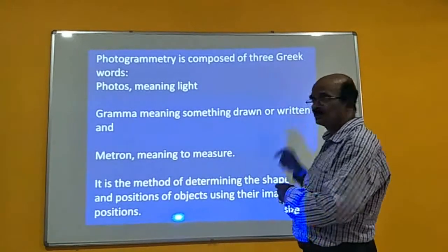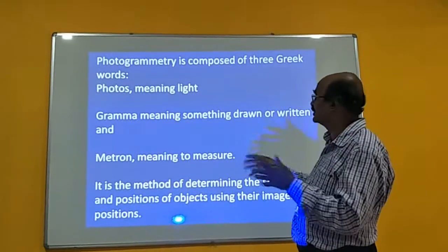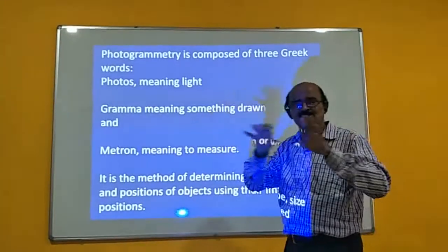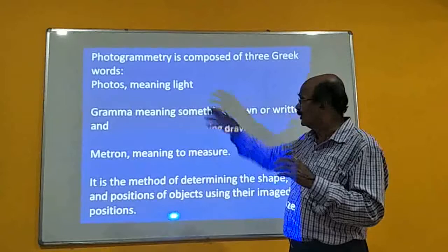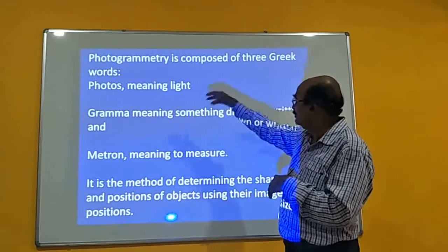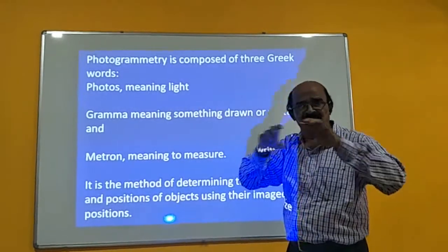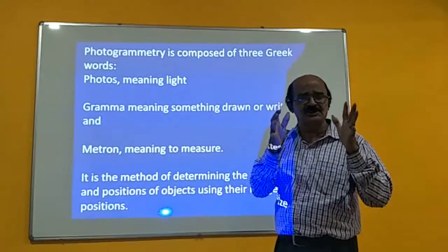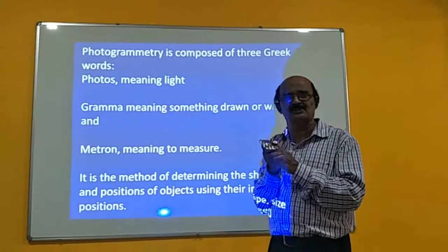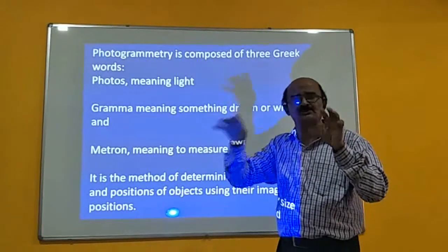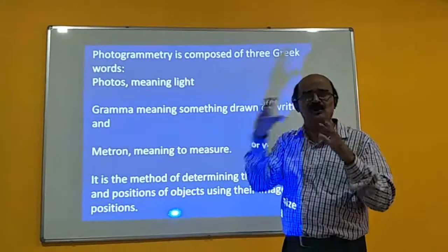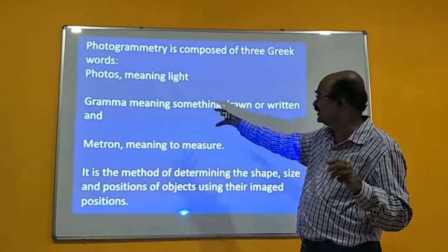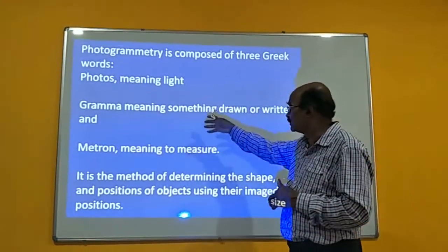Photogrammetry is composed of three Greek words. 'Photos' meaning light — we are making use of electromagnetic radiation as a source, in the visible region of the electromagnetic spectrum, 0.4 to 0.7 micrometer or 400 to 700 nanometer, which is normally used in aerial photography.